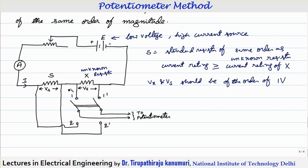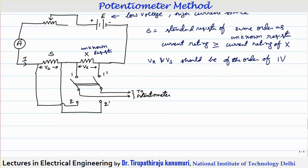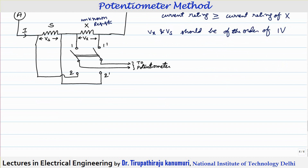Similarly, when measuring the voltage across the standard resistor, the current through the unknown resistor should be the same as through the standard resistor — only then can we take the ratio. That is why the potentiometer is used here, giving very high accuracy. This method is used particularly for resistors with higher current-carrying capacity.